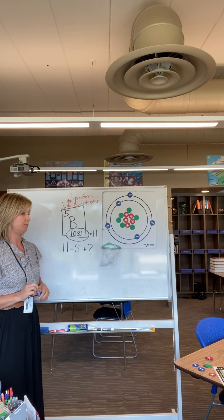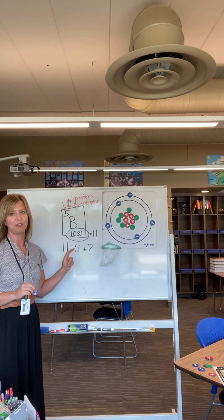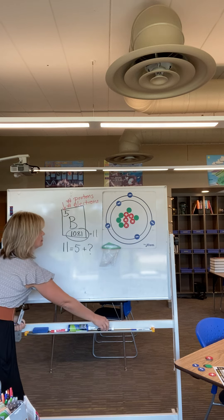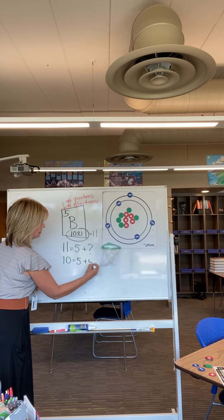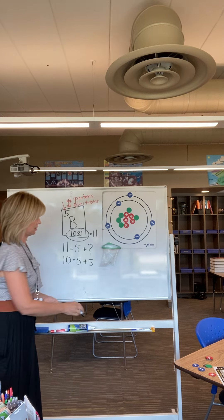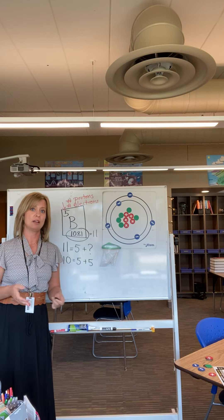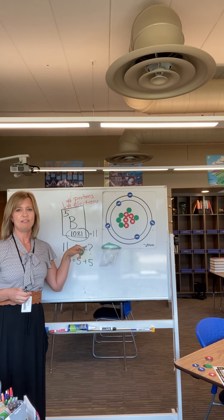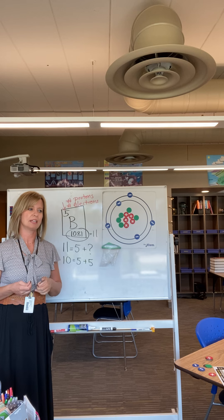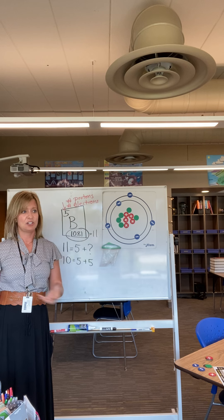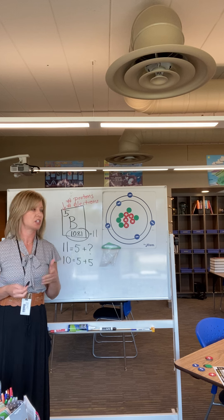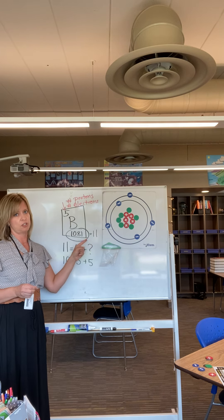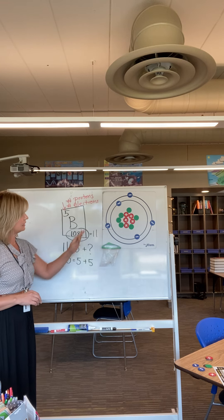10.81 isn't a whole number, and that means sometimes boron might be a little lighter — it might be 10, with 5 protons and 5 neutrons. Taking one neutron away doesn't change the fact that it's boron. It's just a lighter or heavier version of boron. All elements have an average atomic mass because just like anything in nature, there are heavier and lighter versions. Since 10.81 is closest to 11, the most common version is boron-11.